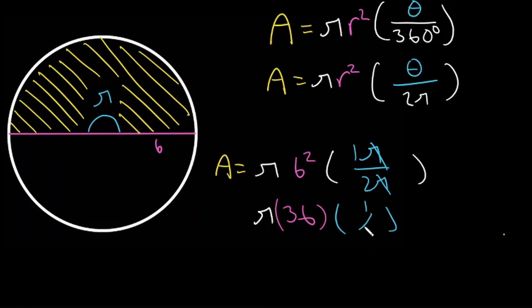So what is 36 times 1 half? That's 36 divided by 2 and that will be 18. So our final answer is going to be 18 pi. So the area of this sector is 18 pi.